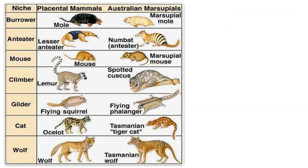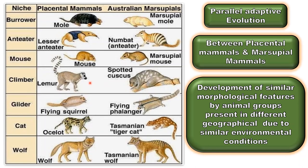This is a very interesting fact about evolution. These marsupial mammals are believed to have evolved before placental mammals. Also, the Australian continent separated from other continents before marsupial mammals evolved. The chart shows placental mammals of North America on the left side, whereas the right side shows marsupial mammals found in the Australian continent. These two groups of mammals evolved along the same line even though they were present in different geographical areas, because their environmental conditions were the same. Development of similar morphological features by different animal groups present in different geographical areas due to similar environmental conditions is called parallel adaptive radiation.